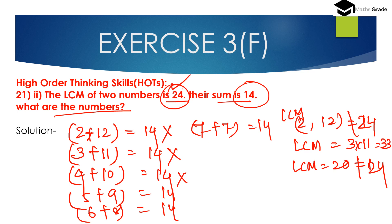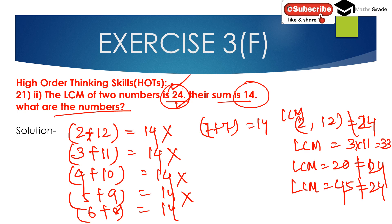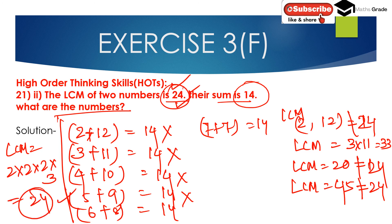Now checking 6 and 8. LCM of 6 and 8: we find that 6 is 2 multiplied by 3, and 8 is 2 multiplied by 2 multiplied by 2. The LCM works out to 24, which equals 24 — so this is correct.